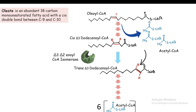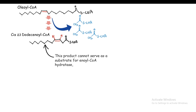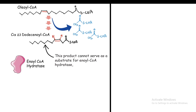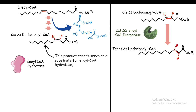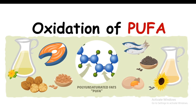The key aspect to remember in monounsaturated fatty acid oxidation is that cis-3-dodecanoyl CoA cannot be recognized by enoyl CoA hydratase, so the reaction cannot proceed. That is why the isomerase enzyme comes into the picture — it forms a trans isomer which can be detected by enoyl CoA hydratase, allowing the reaction to continue.